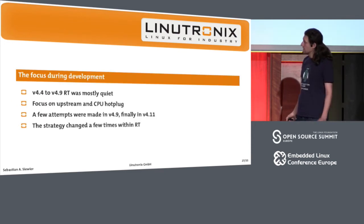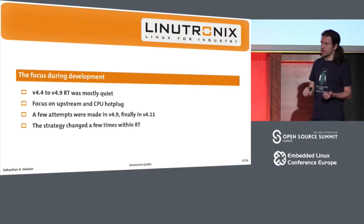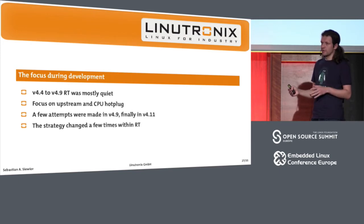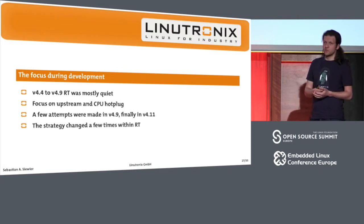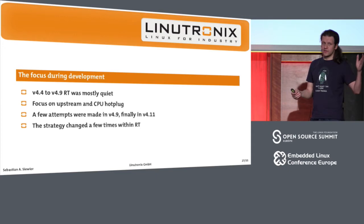Now, the summary of what happened: 4.4 to 4.9 was mostly quiet when you look at the graphs. But in the background, we were targeting CPU hotplug. This was work that we spent over a year on. It started simple — we had a few designs of where we wanted to go, but the implementation in mainline was quite difficult.